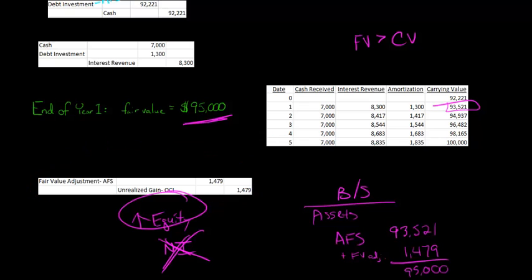Now, if and when we actually sell the available-for-sale security, then we could recognize a realized gain that would affect net income. So with available-for-sale securities, it's not that you will never affect net income. It's just that the unrealized gains and losses bypass the income statement and go to this OCI account.